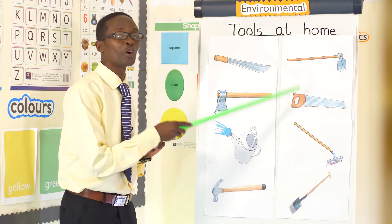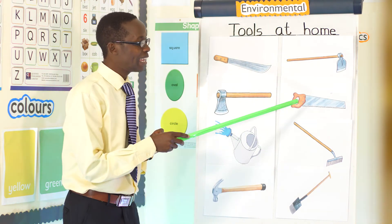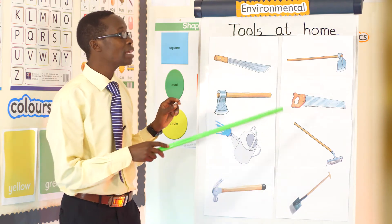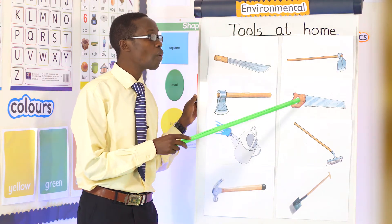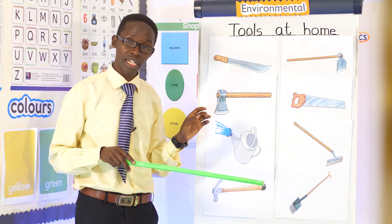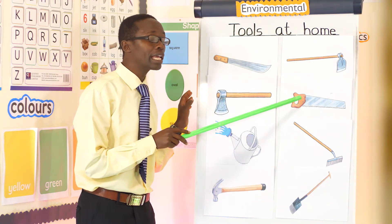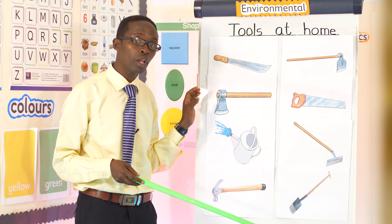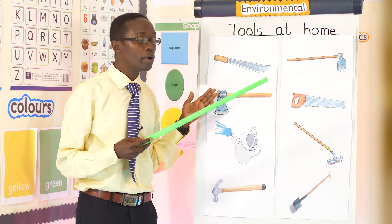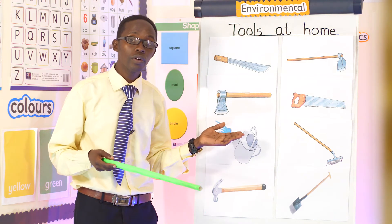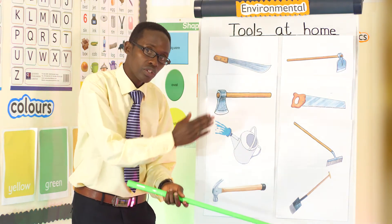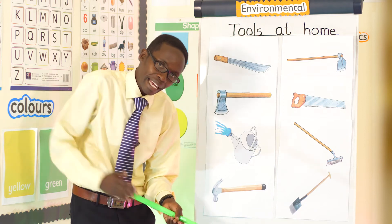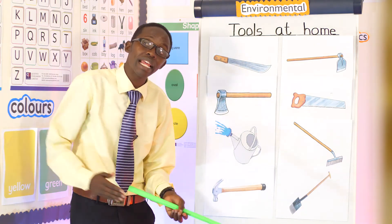We have a saw. This one is used by a carpenter when he wants to cut wood. When he is making or she is making a table, tables are made of wood, and now he or she must cut the wood using a saw. Can you see it?